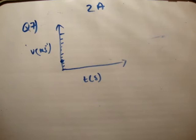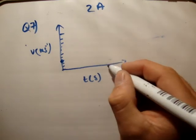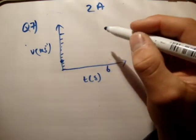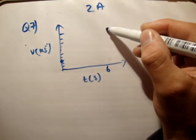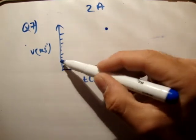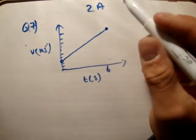And during a 6-second period, so at t equals 6, he's at 11 metres per second. And because it's uniform acceleration, you can join the two points with a straight line.